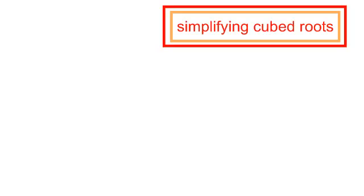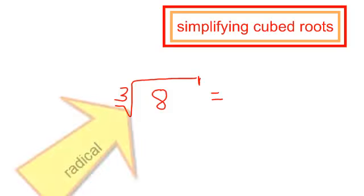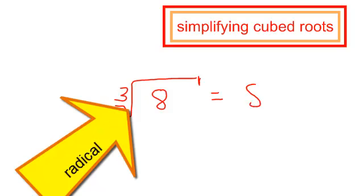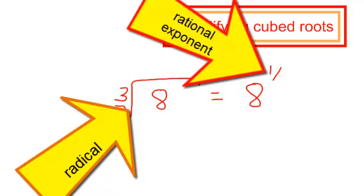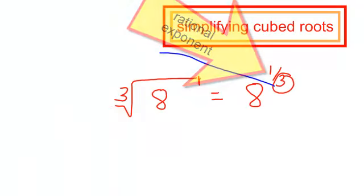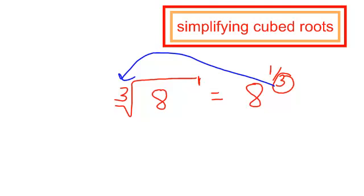You may be wondering what a cube root looks like. The cube root of a number — for example, the cube root of 8 — using rational exponents, that's the same thing as 8 to the 1 third. I do have to write this cube root index because if nothing is there, it's assumed to be a square root.